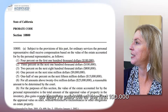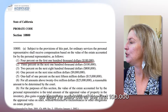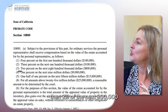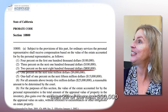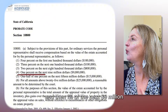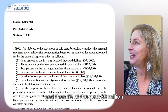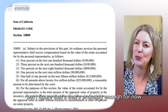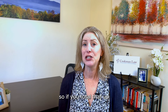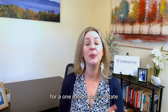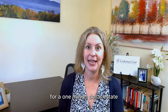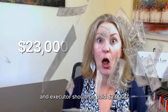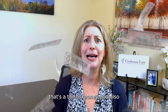Here's what executors are paid when going through the probate court process: 4% of the first $100,000, then 3% of the next $100,000, then 2% of the next $800,000, and then 1% of the next $9 million. If you total that up for a $1 million estate, an executor should be paid $23,000.